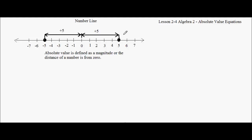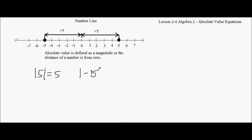So let's look at 5 on the number line. The absolute value of 5 is 5 — we use these two vertical lines for absolute value. And the absolute value of negative 5 is also 5.